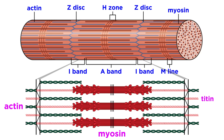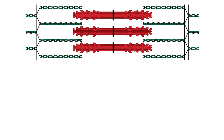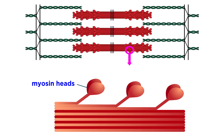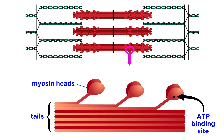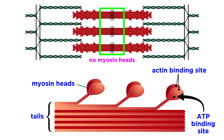Now let's zoom in even further on these two main types of filaments. Myosin is a protein with two globular heads pointing outwards, and a long tail which contributes to the structure of the filament. The heads are the site of all the activity, since there are ATP binding sites as well as actin binding sites, meaning this is where the thick and thin filaments will interact, by making cross bridges. It's important to note the lack of myosin heads in the center of the sarcomere, just as there also are no thin filaments.